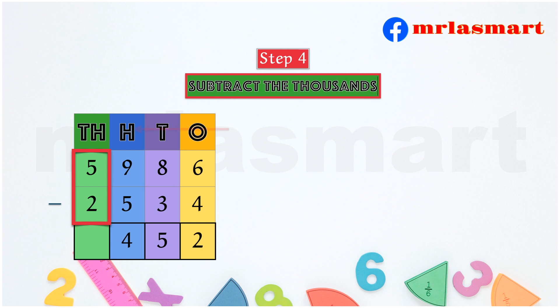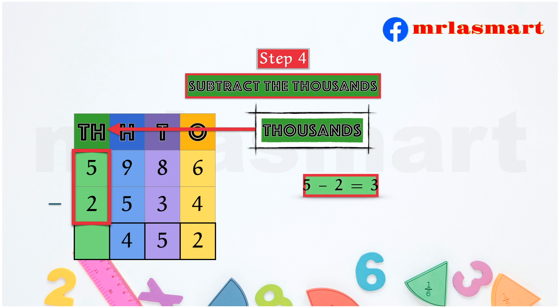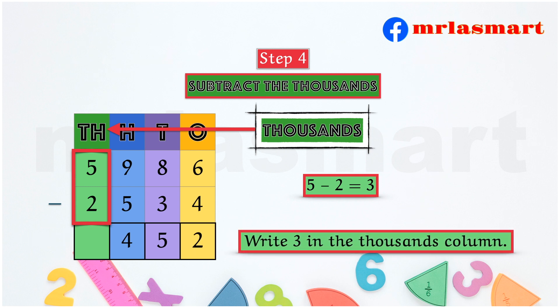Step 4. Subtract the thousands. 5 minus 2 equals 3. Write 3 in the thousands column.